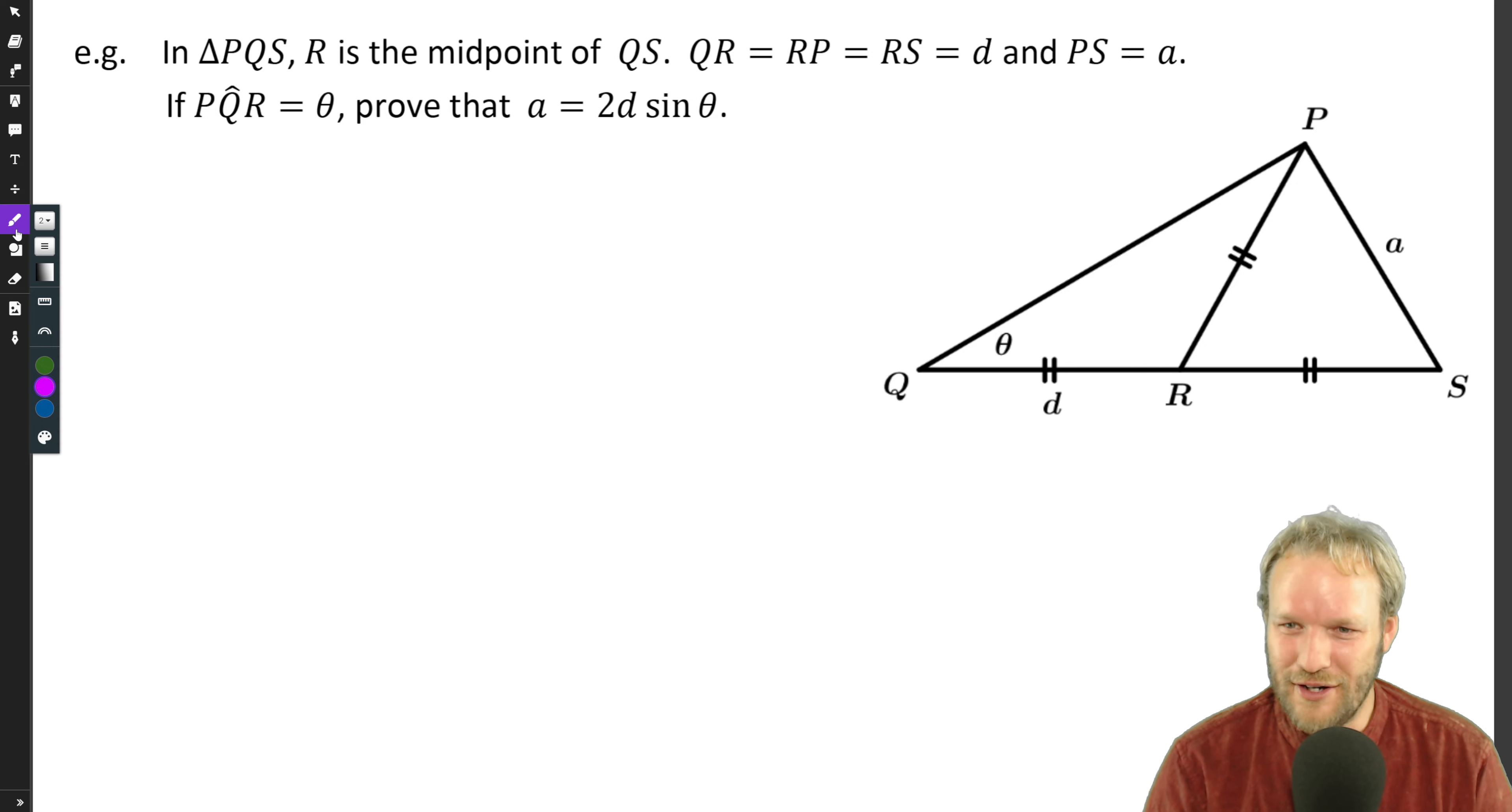Okay, so we're given three triangles in the picture. Can you see all three triangles? And we're given some information about them. So first up, let's just write down all the other things we know. If QR is d and RS is equal to that, that's also going to be d, and this is also going to be d over there. Great stuff.